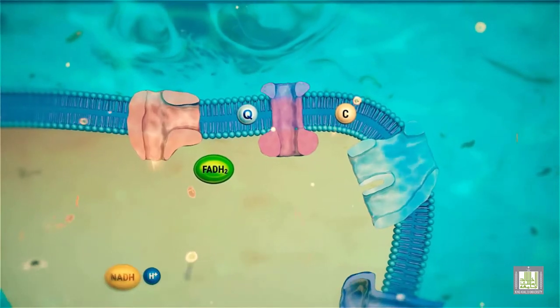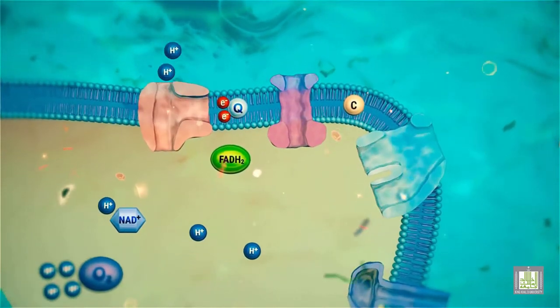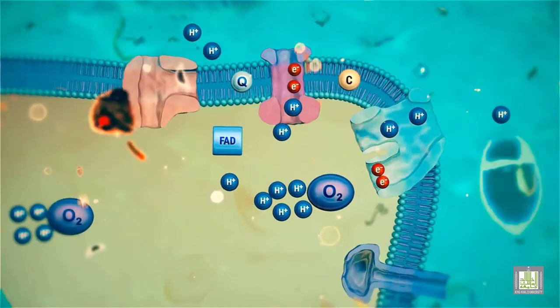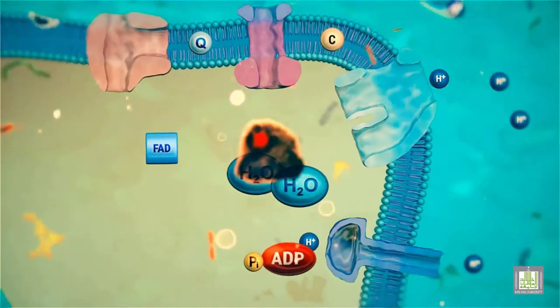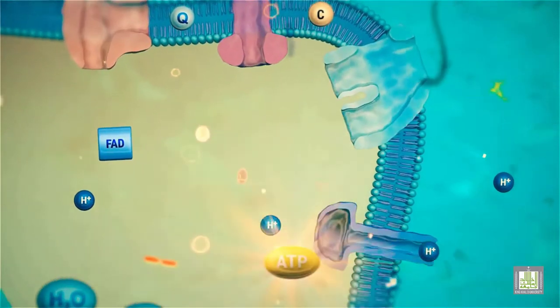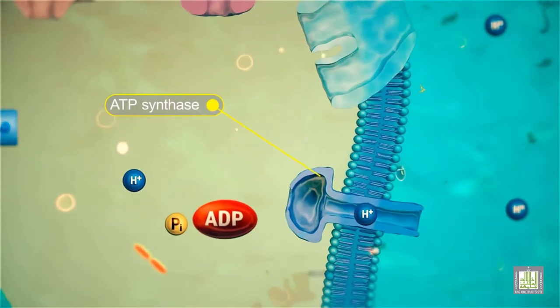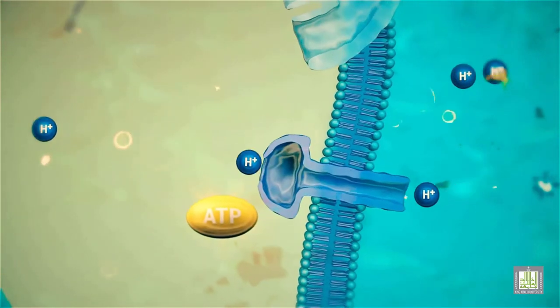The transfer of protons generates a proton motive force across the membrane of the mitochondrion. Since membranes are impermeable to ions, the protons that re-enter the matrix pass through special proton channel proteins called ATP synthase. The energy derived from the movement of these protons is used to synthesize ATP from ADP and phosphate.